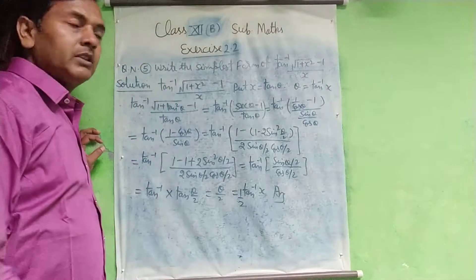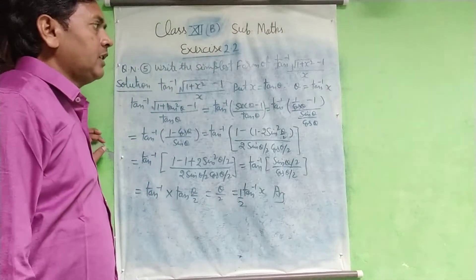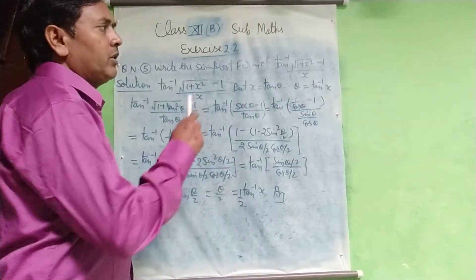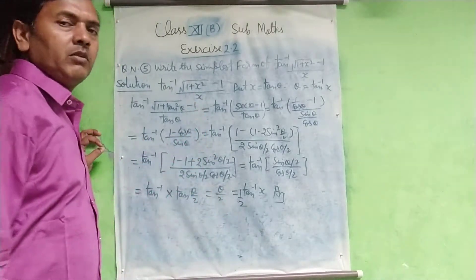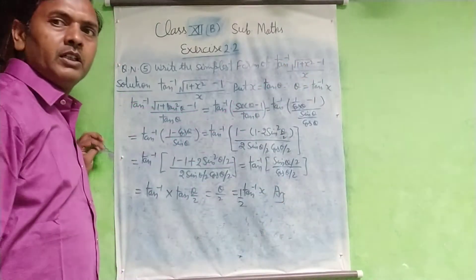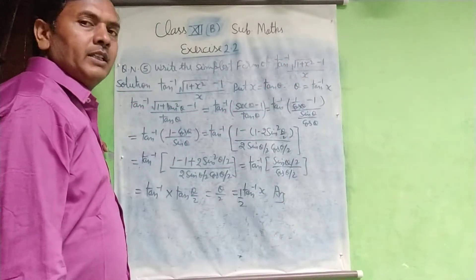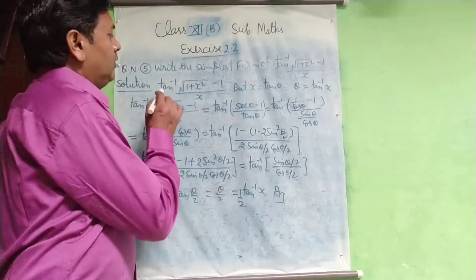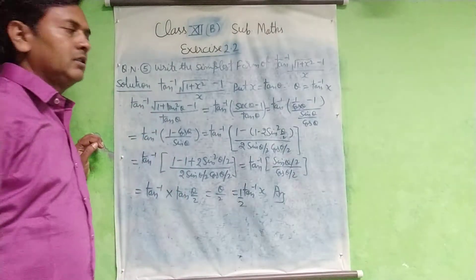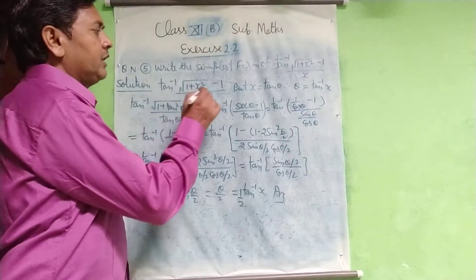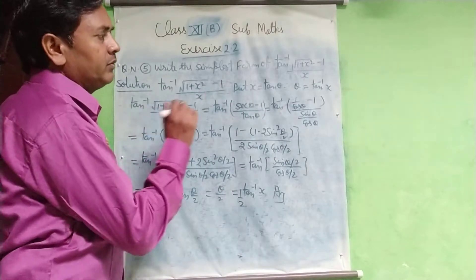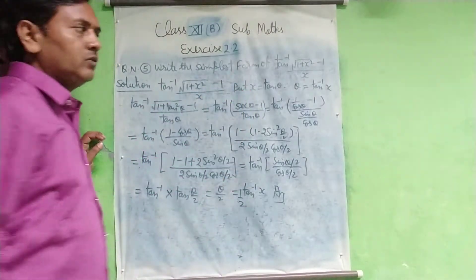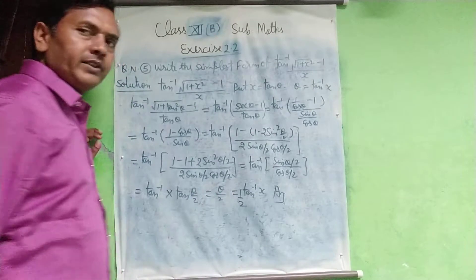Class 12 Mathematics, Exercise 2.2, Question: Find the simplest form of tan⁻¹[(√(1+x²) - 1)/x]. We put x = tan θ, so θ = tan⁻¹x.